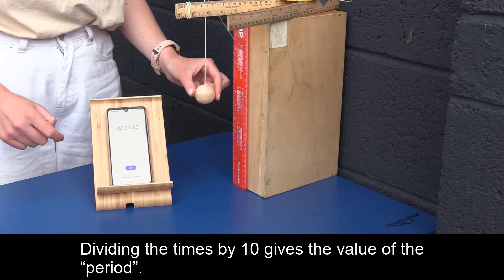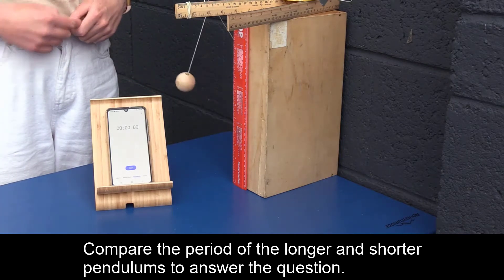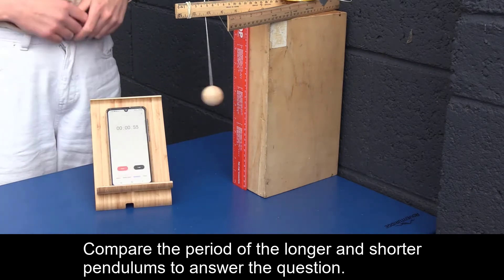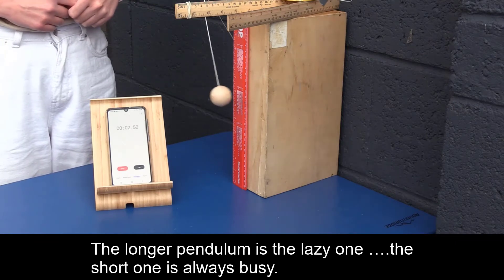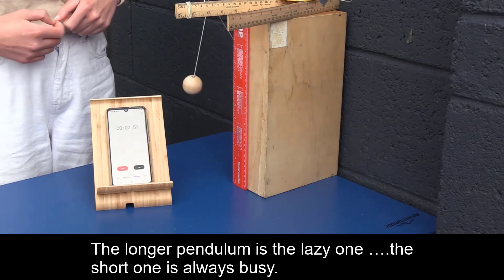Dividing the times by 10 gives the value of the period. Compare the period of the longer and shorter pendulums to answer the question. The longer pendulum is the lazy one and the shorter one is always busy.